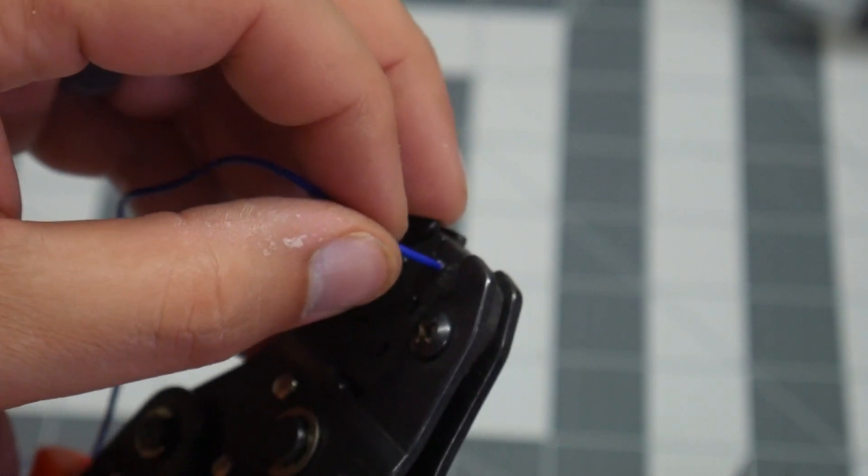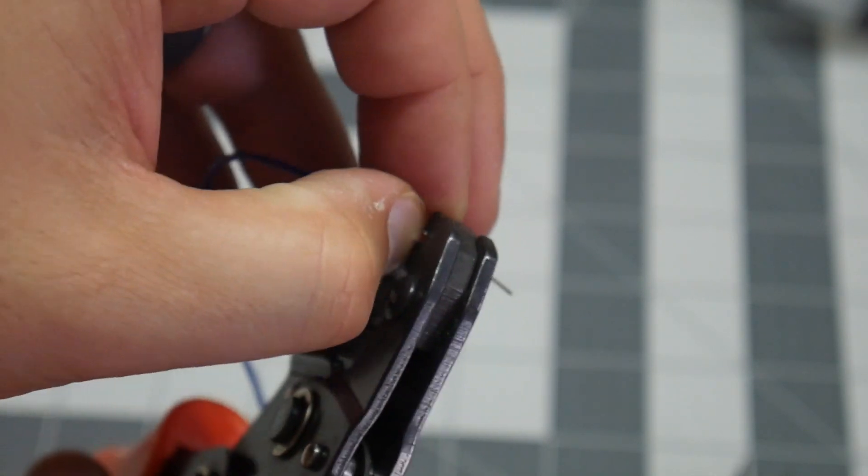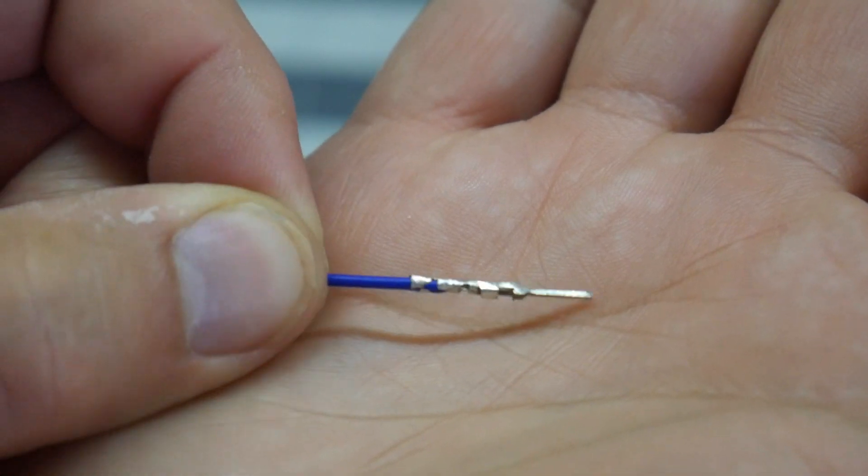Then all I need to do is fully squeeze down and pull it out. And there we have a good crimp on our wire.